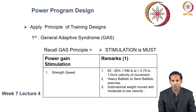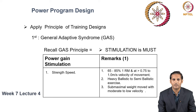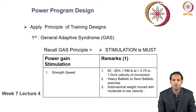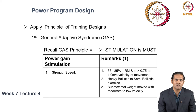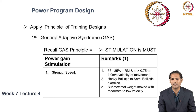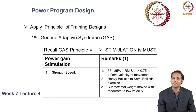For strength speed, the weight lifted is a little heavier, in between 65–85% of 1RM. The velocity of movement is a little slower, in between 0.75 to 1 meter per second. The exercises that correspond to strength speed are heavy ballistic exercises and semi-ballistic exercises.